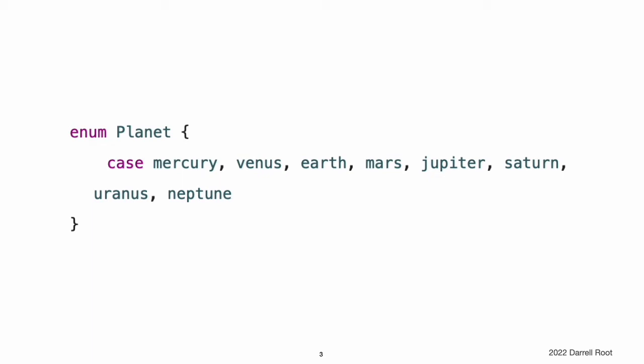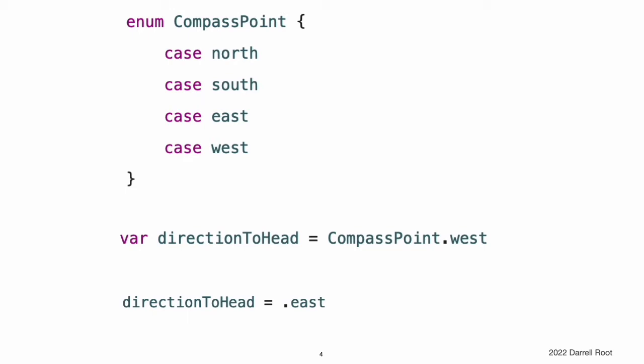Multiple cases can appear on a single line, separated by commas. Each enumeration definition defines a new type. Like other types in Swift, their names, such as CompassPoint and Planet, start with a capital letter. Give enumeration types singular rather than plural names, so that they read as self-evident. The type of directionToHead is inferred when it is initialized with one of the possible values of CompassPoint. Once directionToHead is declared as a CompassPoint, you can set it to a different CompassPoint value using a shorter dot syntax. The type is already known, so you can drop the type when setting its value, making for highly readable code when working with explicitly typed enumeration values.